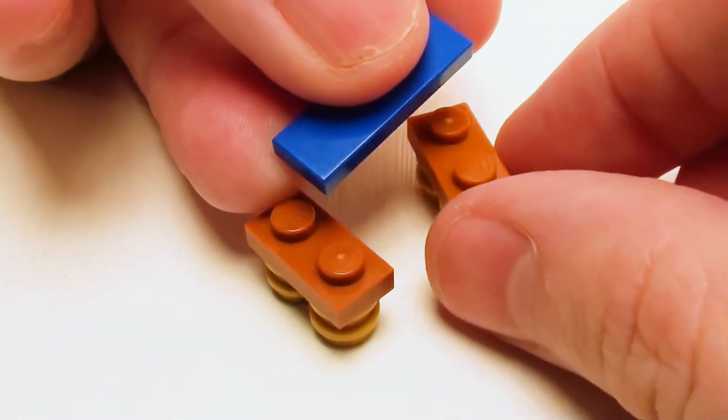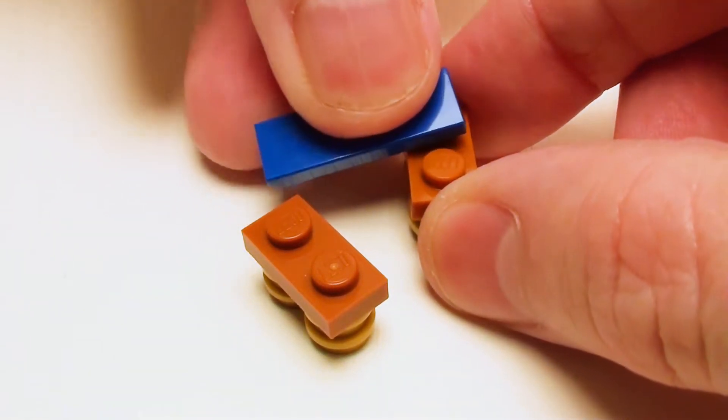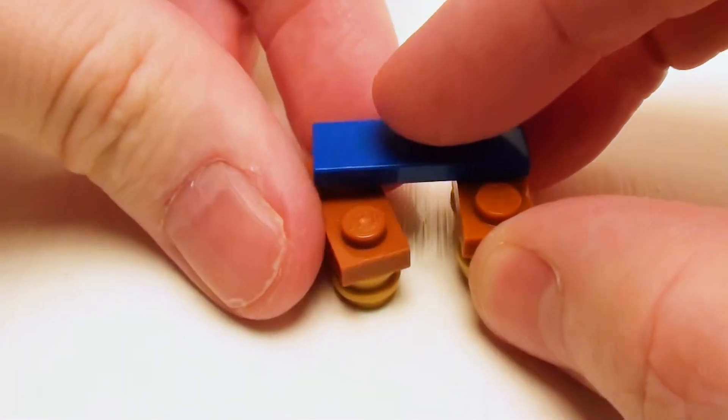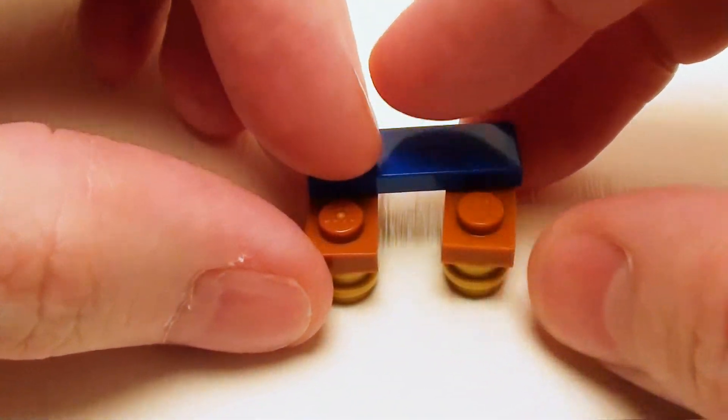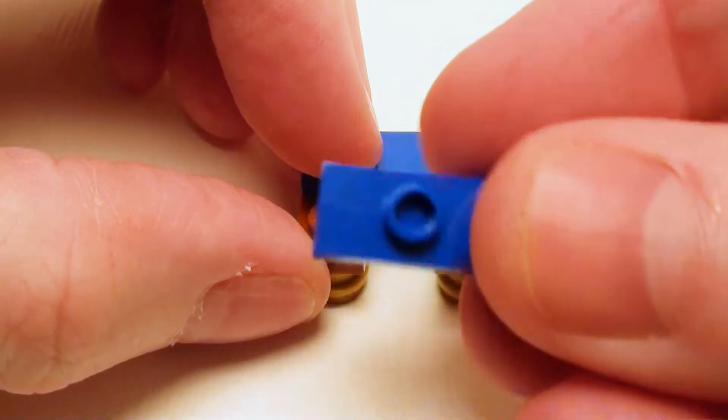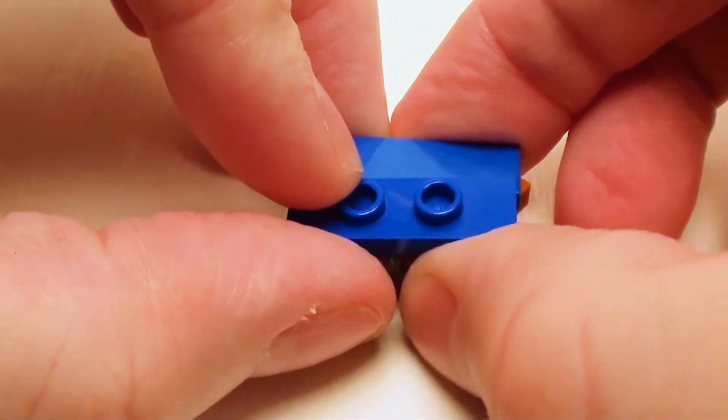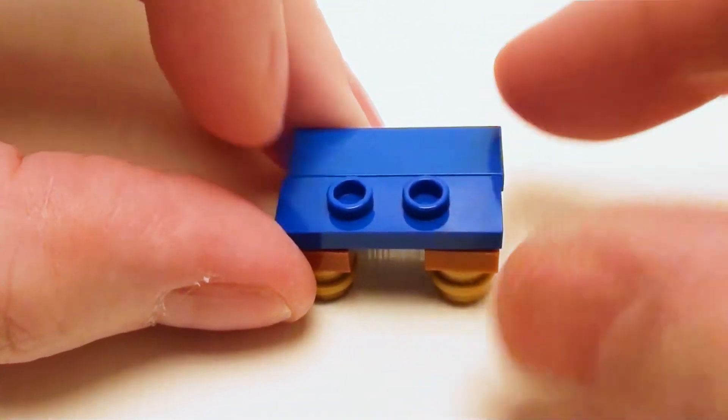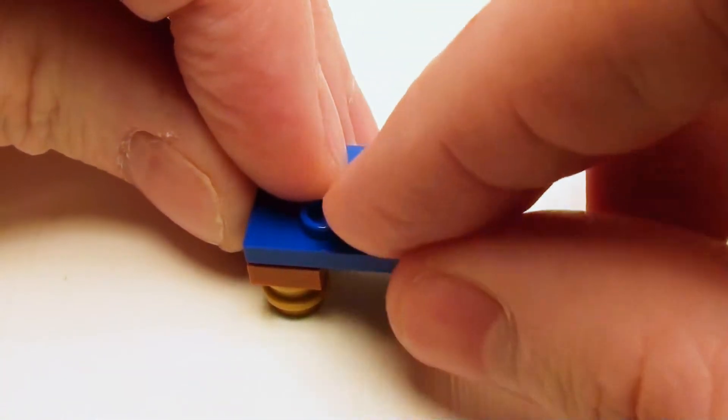Then I'm going to take a 1 by 3 flat tile. I'm going to place this on one end. And we're going to put a set of legs on the other end. And in the other spot, a 1 by 3 jumper plate. Now these two studs here are going to be used to anchor down our minifigure to the bench.